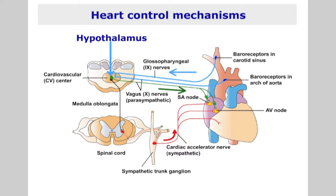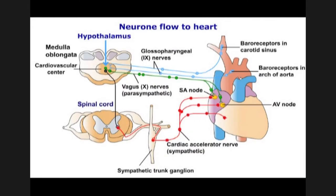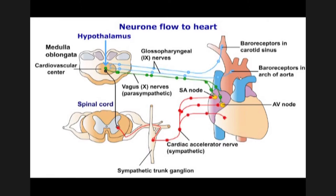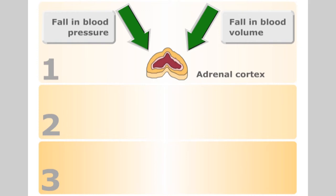Blood pressure control and feedback is monitored by baroreceptors in the arch of the aorta and in the carotid sinuses. The level of blood oxygen and carbon dioxide concentration is monitored by chemoreceptors in the carotid and aortic bodies, located close to the baroreceptors. Feedback from these structures is processed in the cardiovascular centre in the medulla oblongata. Receptors are also situated in the hypothalamus and in the kidneys. The renal system, adrenal and pituitary glands also have a profound effect on blood volume and blood pressure.